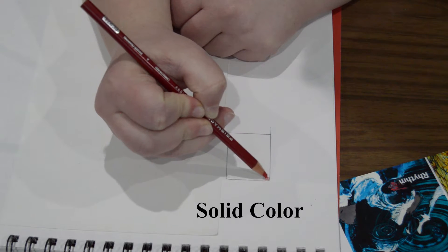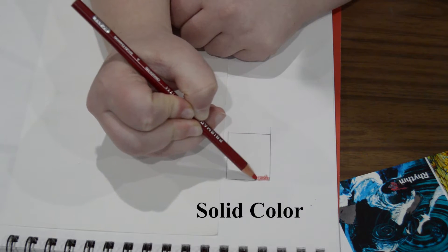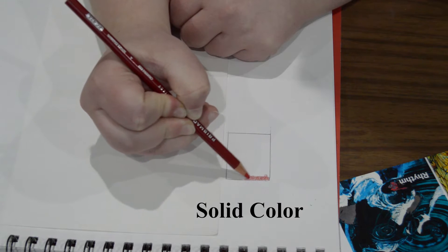At one corner of my rectangle I'm going to lightly draw tiny circles that slightly overlap each other with my colored pencil.